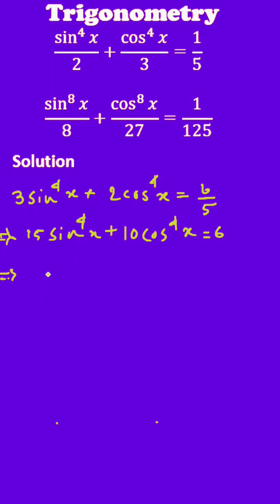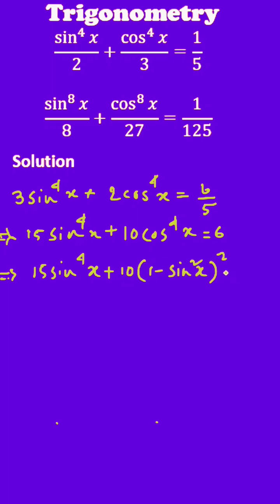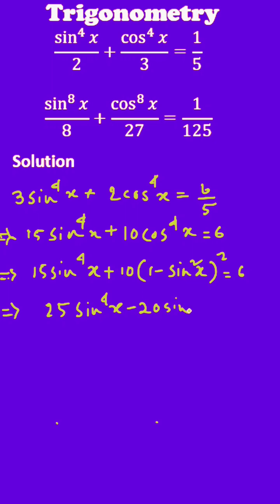So it will be 15 sin⁴x + 10(1 − sin²x)² = 6. After simplification of the expression you will get 25 sin⁴x − 20 sin²x + 4 = 0.